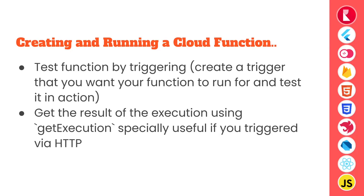You can provide all three values, only one, or even none of them, in which case you can only trigger your HTTP functions via your server-side SDK. Finally, you can test that the function is doing the correct thing by triggering a trigger that your function runs on. For example, if your function runs on a collection create trigger, you can just create a new collection to see your function in action. You can check the output and logs right from the console, and get the result of execution using get execution with the execution ID — especially useful if you triggered your execution via HTTP.